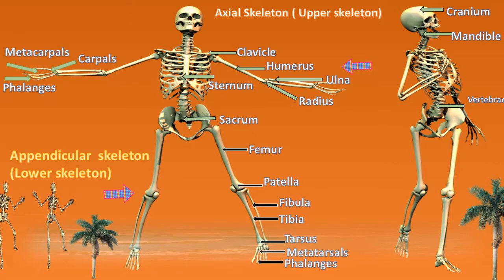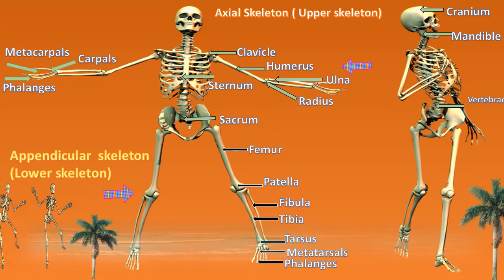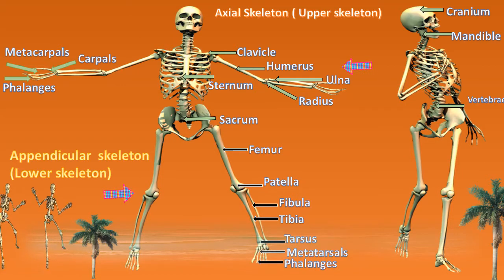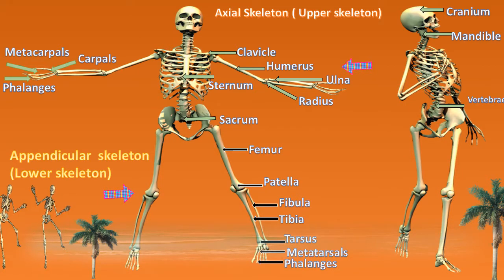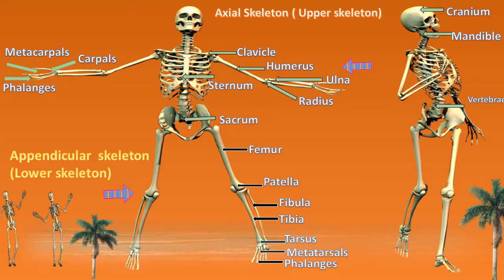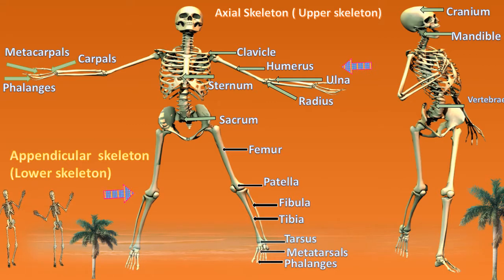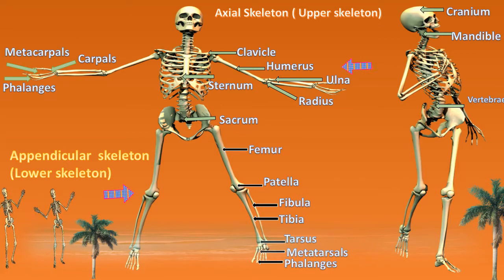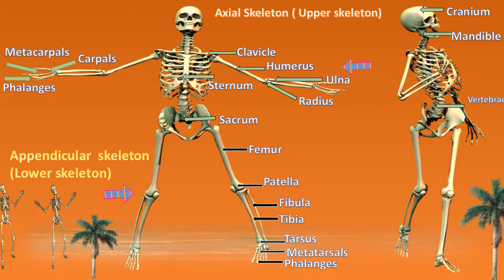Mrs. Skellington is showing the cranium, which is otherwise called the skull. Then she's also showing the mandible. You know when you talk and your jaw bones go up and down — that is known to be your mandible moving up and down.